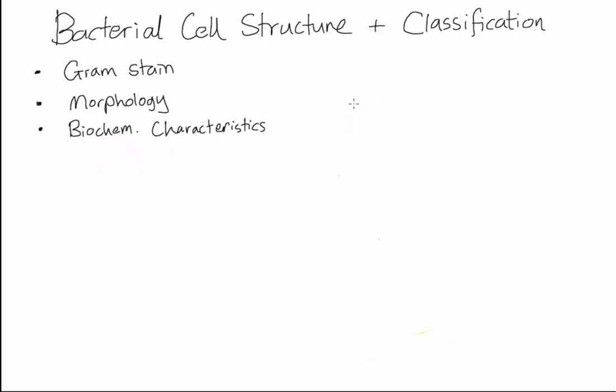We'll be talking about Bacterial Cell Structure and Classification in this video. These are three tools we use to classify bacteria: gram stain, their morphology or shape, and their biochemical characteristics.